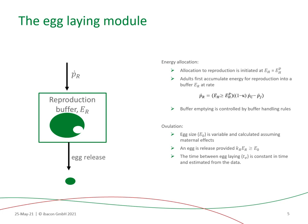Indeed, the feeding data and the observation of weight at birth of the new generations showed variability, and we know that a variable feeding implies non-constant reserve density of the mother, and consequently non-constant reserve density at birth. The second rule is that an egg is released provided that there is sufficient energy available in the reproduction buffer. And finally, the time between egg-laying is constant and estimated from the data.